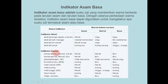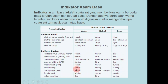Indikator buatan antara lain: kertas lakmus merah, lakmus biru, fenolftalein, bromtimol biru, metil merah, metil kuning, metil jingga, fenol merah, dan indigo carmine. Perhatikan perubahan warna yang terjadi dalam larutan asam, larutan basa, dan larutan netral — kalian harus memahami tabel perubahan warna ini.